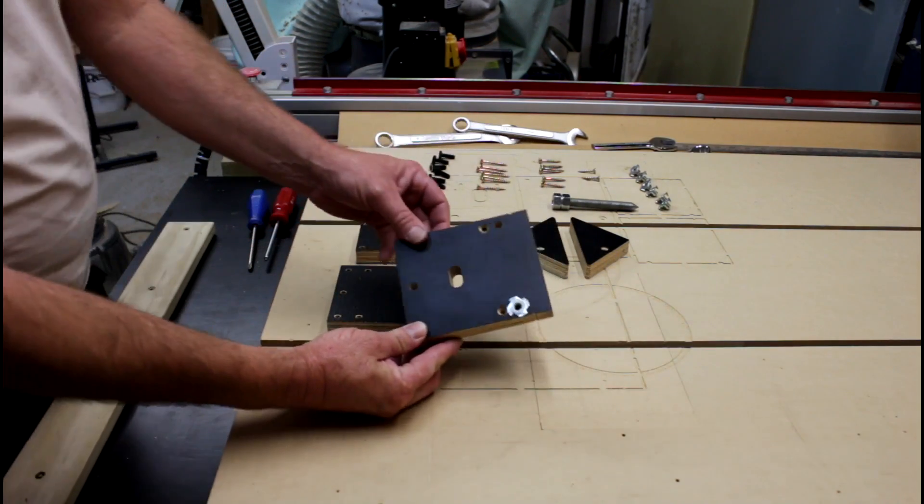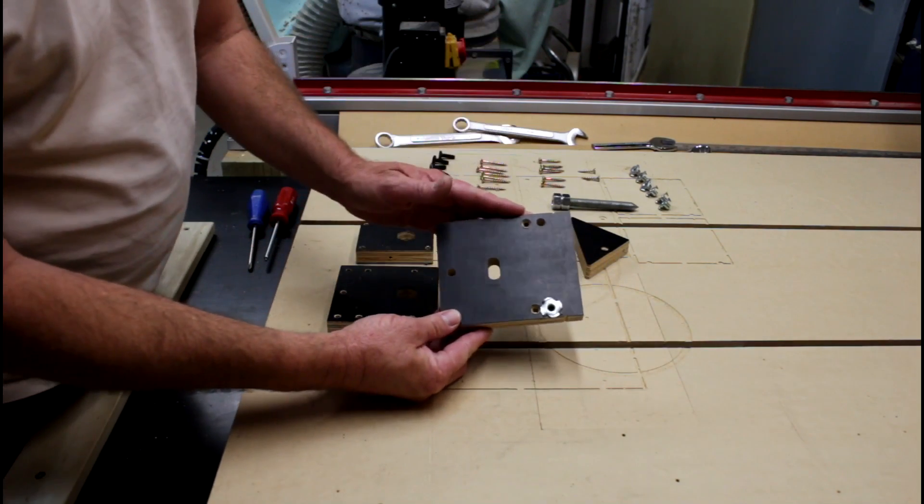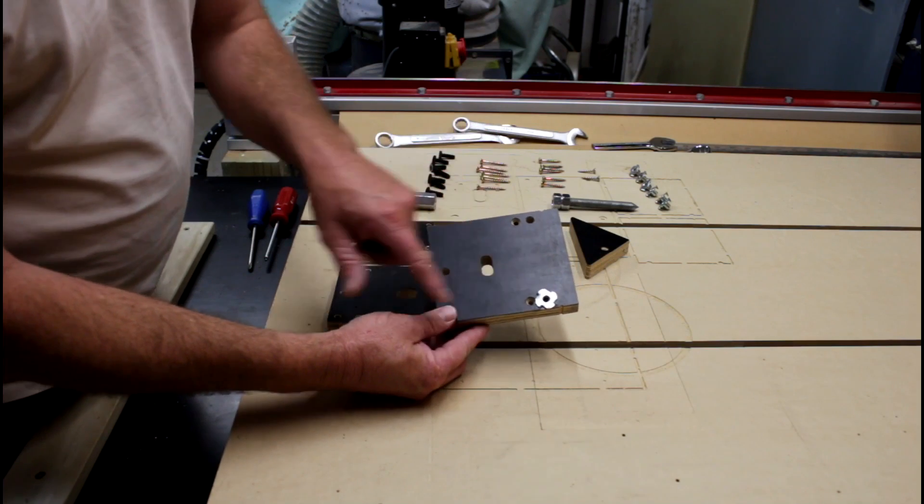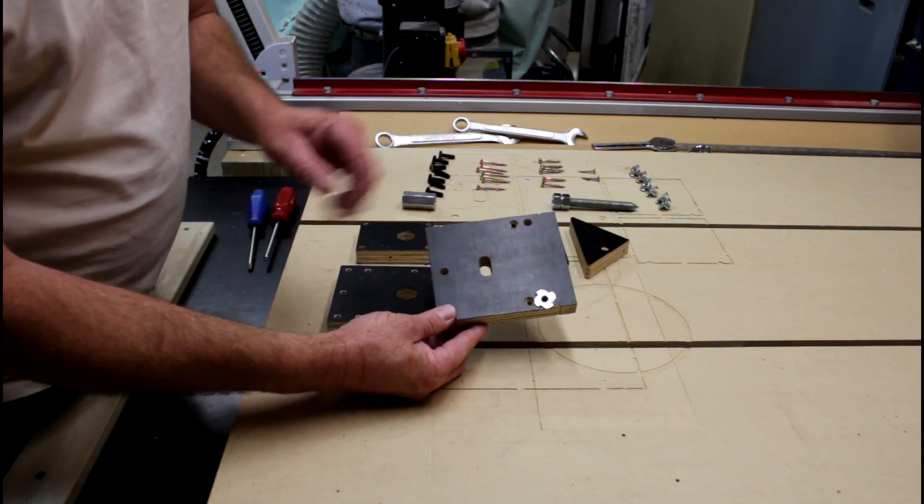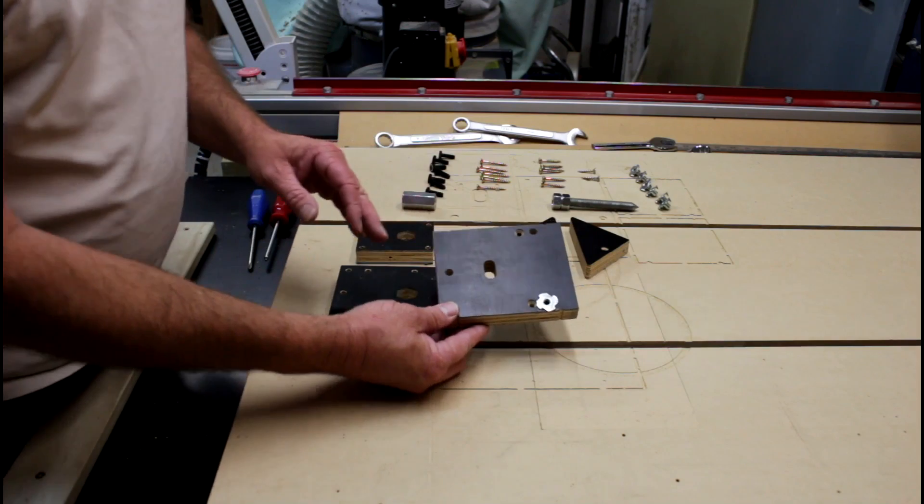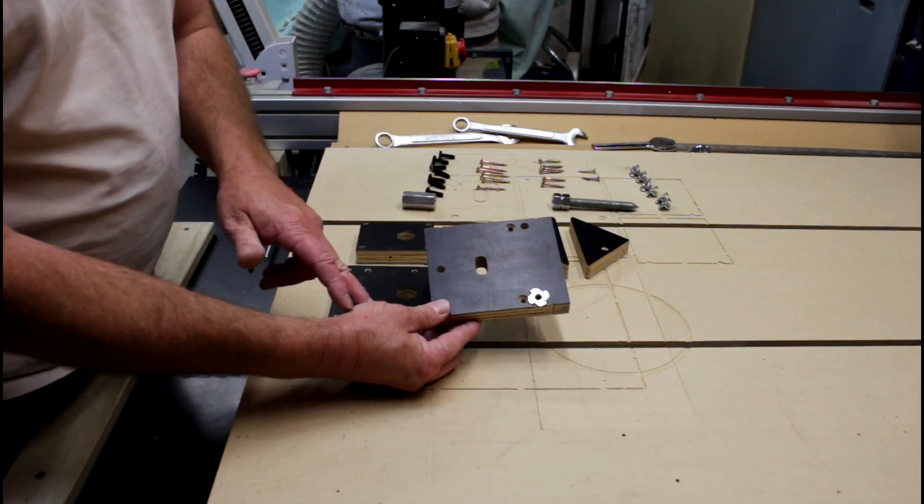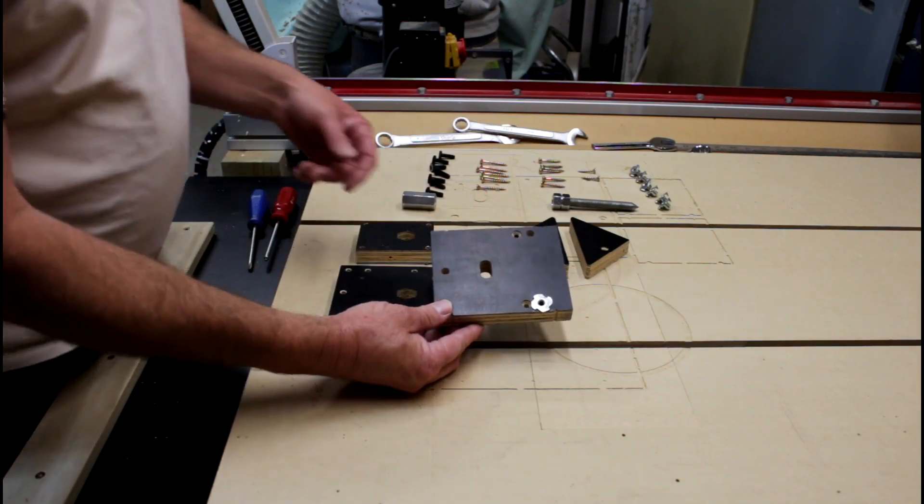So this is the first piece. This is the base, and it requires some T-nuts put into it. In fact, it's going to have seven of them in total. I'm using quarter inch ones because I brought a bag of 200 of them quite a while ago.